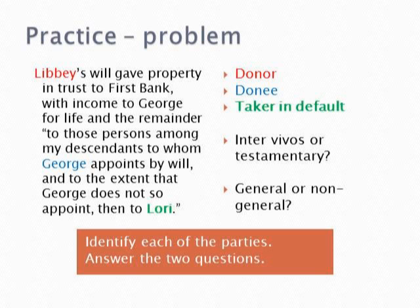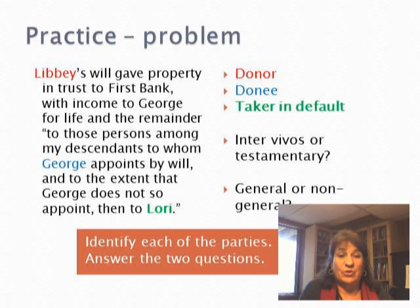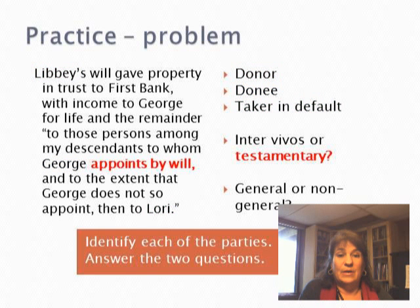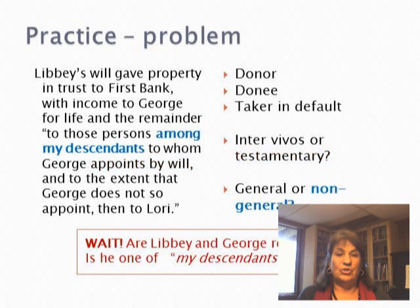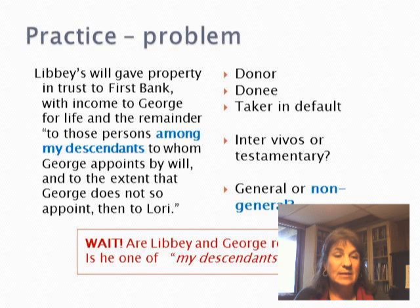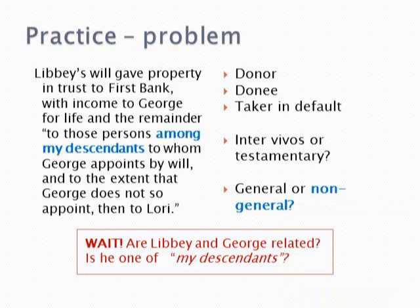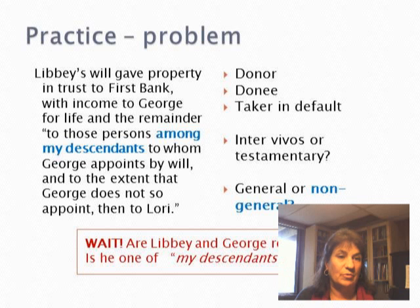The donor is Libby. The donee is George — she created the power, he holds it. The taker in default is Lori, so if George doesn't appoint, it goes to Lori. Inter vivos or testamentary? It says he has to appoint by will, so it's testamentary. General or non-general? He can only appoint among Libby's descendants — that looks non-general. But wait: are Libby and George related? Is he one of those descendants? Because if he is, that makes this a general power of appointment.